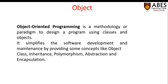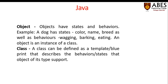First we need to learn about what is a class and what is an object. A class is basically defined as a template or blueprint that describes the behavior that objects of its type support. In Java, how you can define and design a particular class, and how you can create an object of that class. Objects have basically states and behaviors. For example, a dog has a state — color, name, breed — as well as behaviors like wagging, barking, eating. An object is an instance of a class.